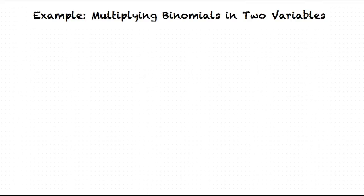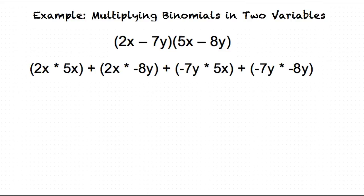Our next example will be 2x minus 7y times 5x minus 8y. Now we use FOIL giving us 2x times